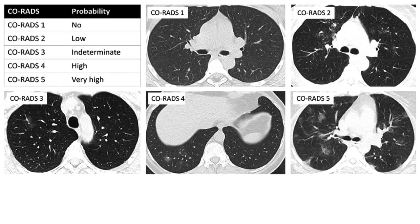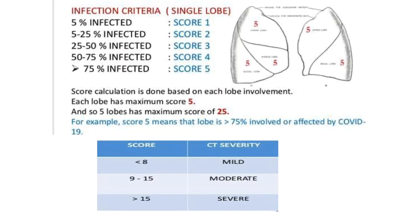CO-RADS 1 shows no lung involvement — completely normal. CO-RADS 2 shows few ground glass opacities near the cardiac shadow on the right side. CO-RADS 3 shows peripheral ground glass opacities on the right side. CO-RADS 4 is peripherally present, nearly subpleural in the posterior basal part. CO-RADS 5 shows multilobar bilateral ground glass opacities — very highly likely of COVID-19 pneumonia.